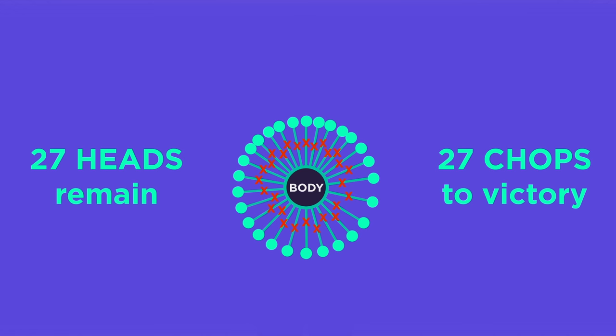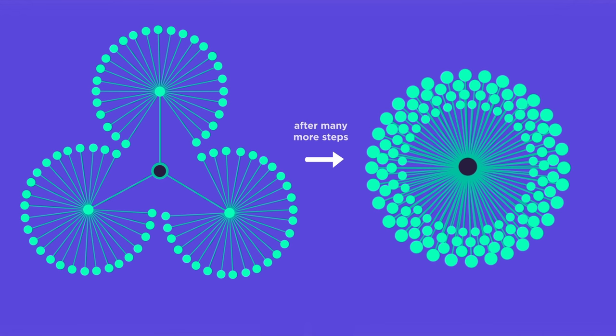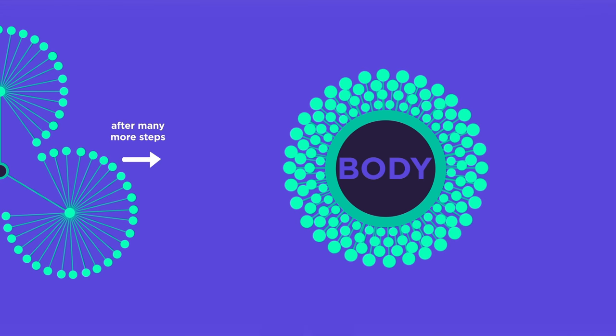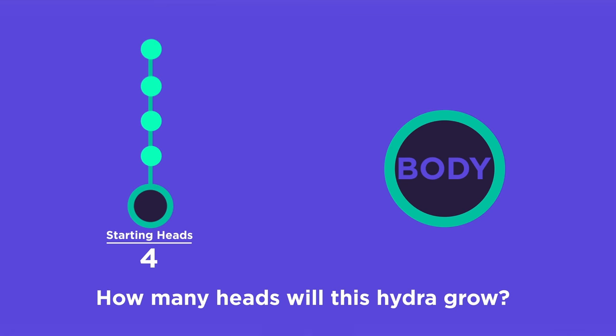Here's what the first 15 steps look like if you start with a hydra that's a line of height four. After many more steps, this hydra will look like a spiky ball. Just a body with many heads attached directly to it. Then, you'll be able to chop off each of those heads and defeat it. Here's a challenge question. How many heads will be in this spiky ball if the original hydra is a line of height four? And how many steps will it take to finally defeat this hydra? Okay. After all those examples, what have we learned?